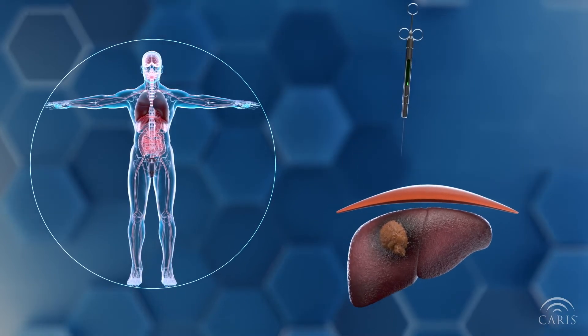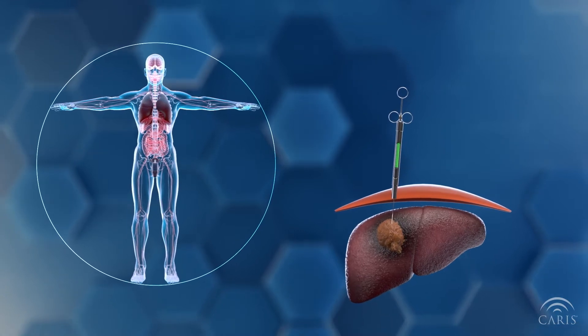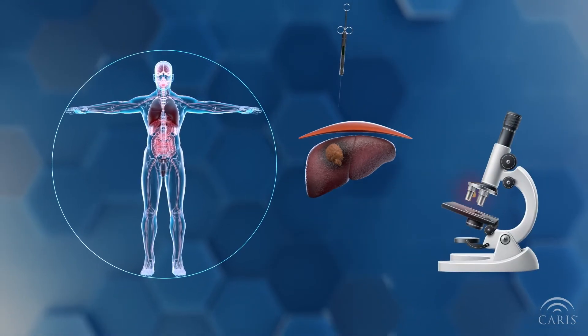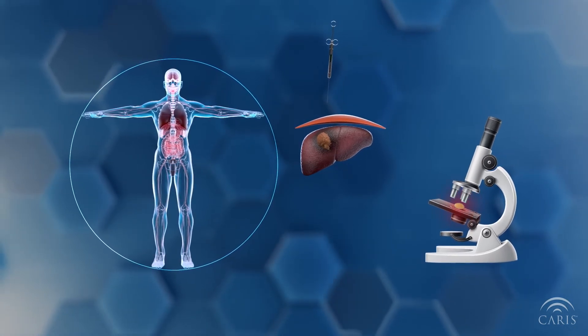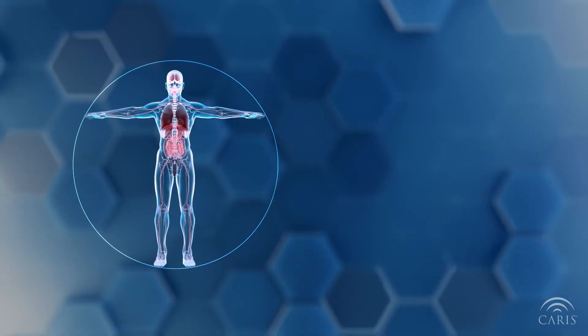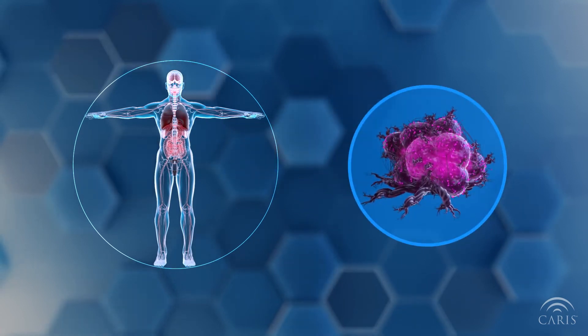A biopsy procedure is performed by removing a small area of the tumor so that a pathologist can look at the cells under a microscope to determine if they are cancer cells and to identify which type. Physicians use several diagnostic tests to confirm the presence, type, and stage of cancer.